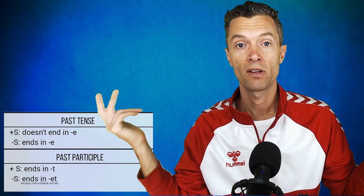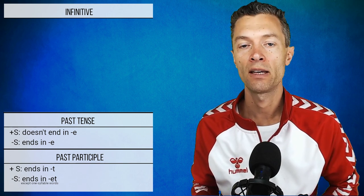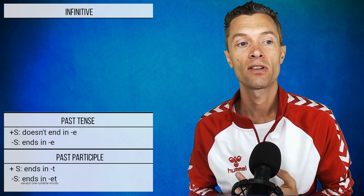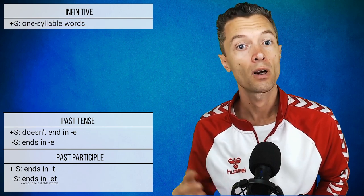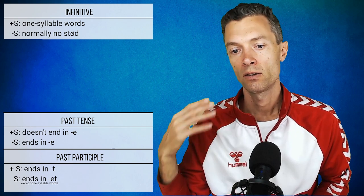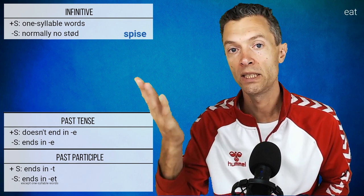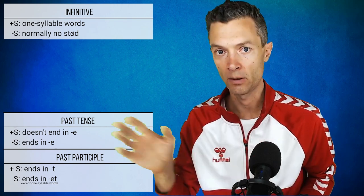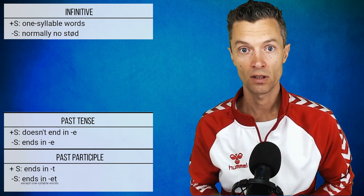Now let's look at the infinitive form. The infinitive in Danish normally ends in -e, and the e-rule tells us that words ending in -e normally never have stød. So hardly any infinitive forms have stød. For example, 'købe' and 'spise' — or 'spis', more normally said in a sentence. But there are exceptions where stød does occur in the infinitive.